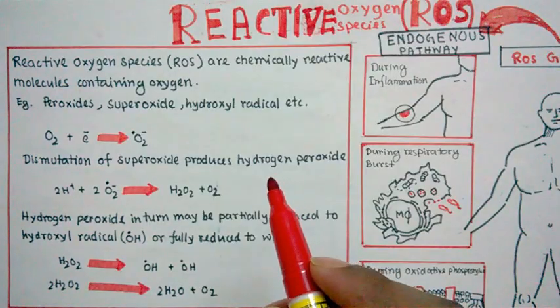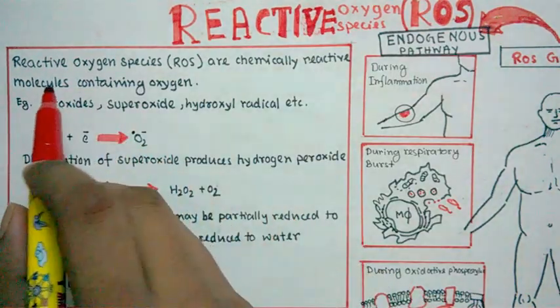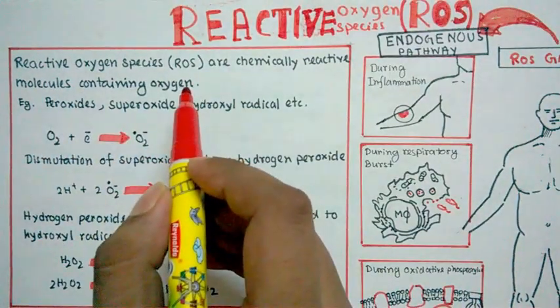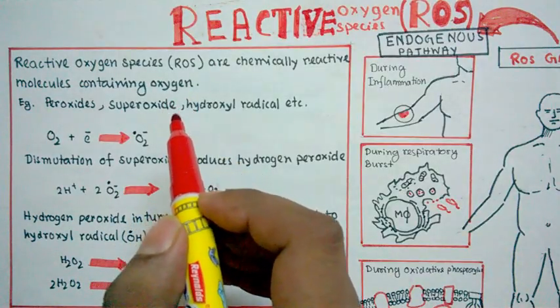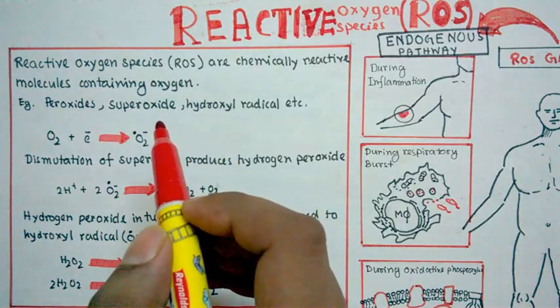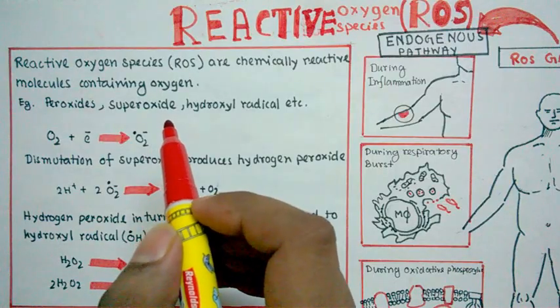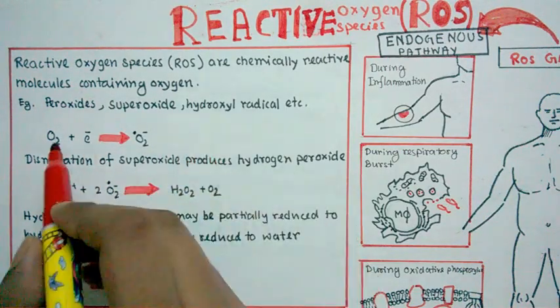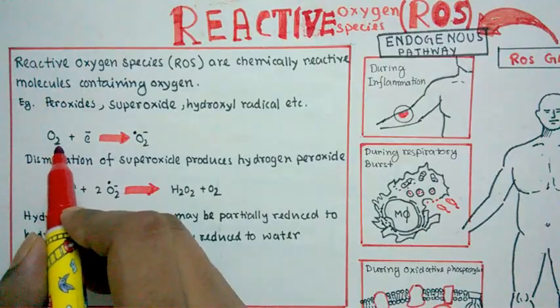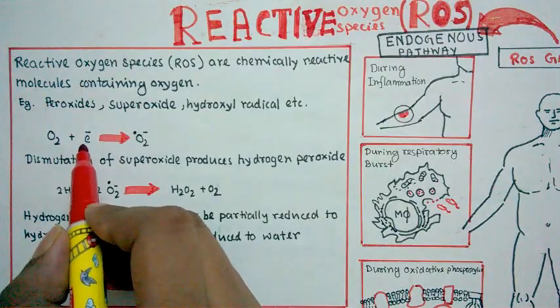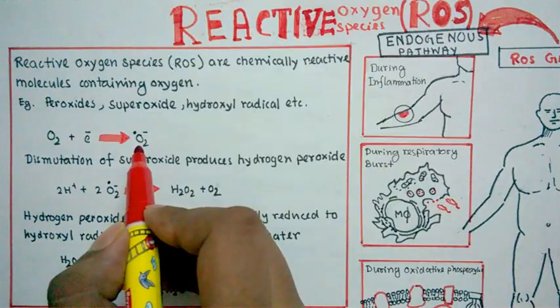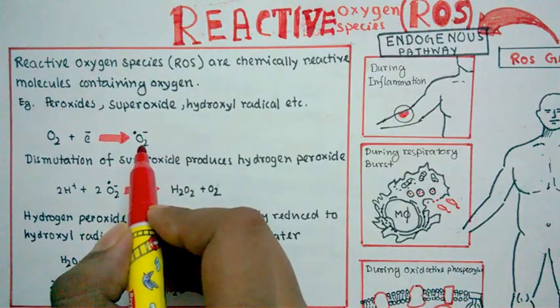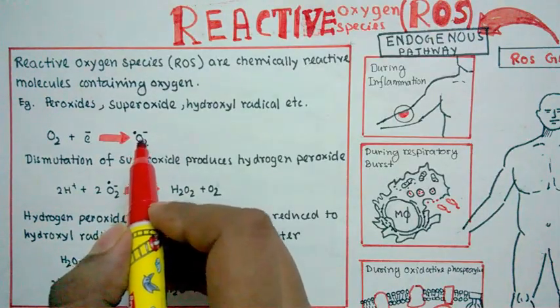ROS are actually chemically reactive molecules which have oxygen. Such ROS are peroxide, superoxide, and hydroxyl radical. So we would discuss them step by step. So here is oxygen, and this oxygen once reduced by gaining one electron would form a superoxide radical, and superoxide radical is super duper dangerous.